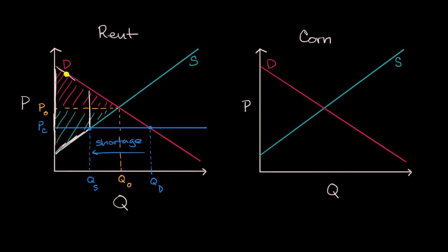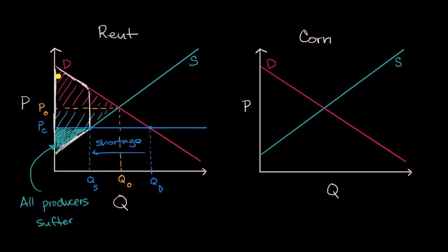Think about how things have shifted. What is the producer surplus now? The producer surplus is only this little blue triangle at the bottom. So you see very clearly that all producers suffer here. Now you might say, of course this is a rent control, but surely the consumers will benefit. Well, it is the case that some consumers — the ones that are able to get into a unit — they might benefit. Some consumers benefit.